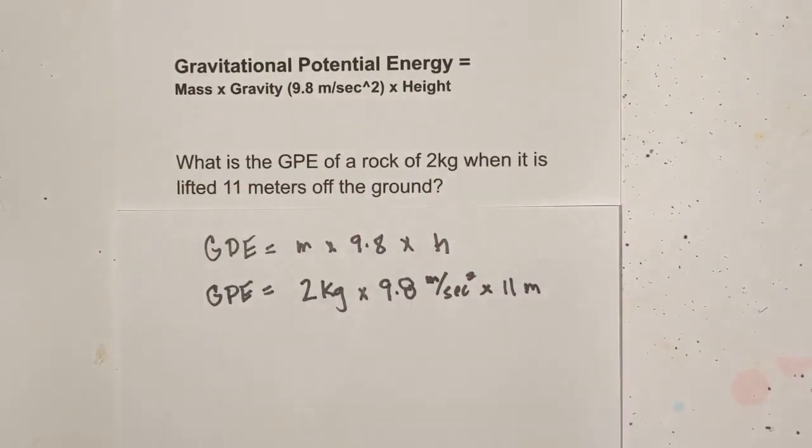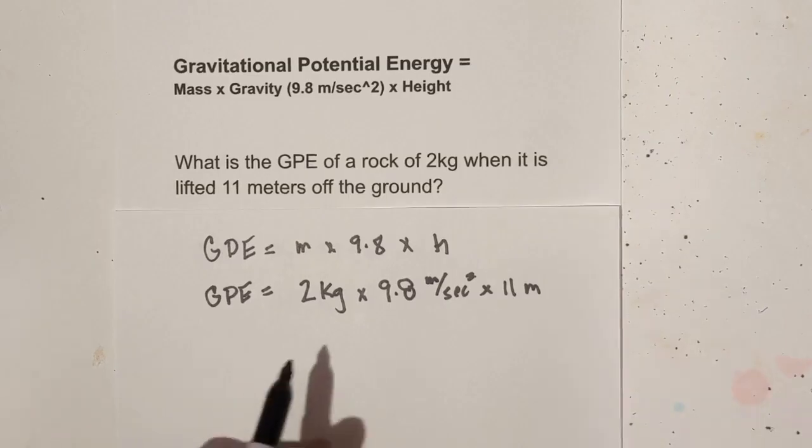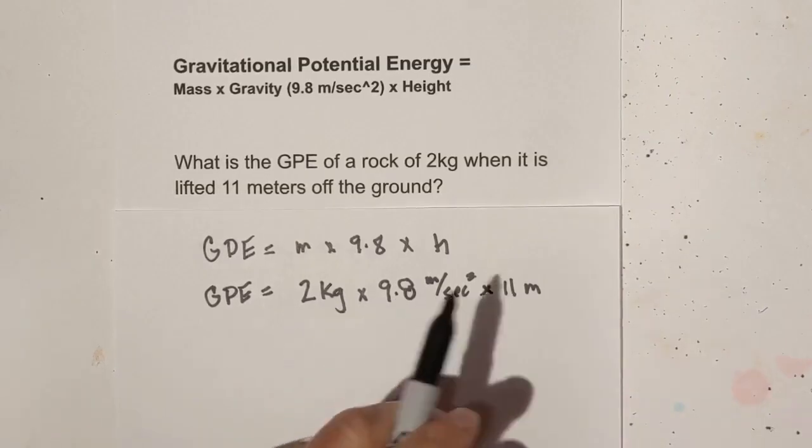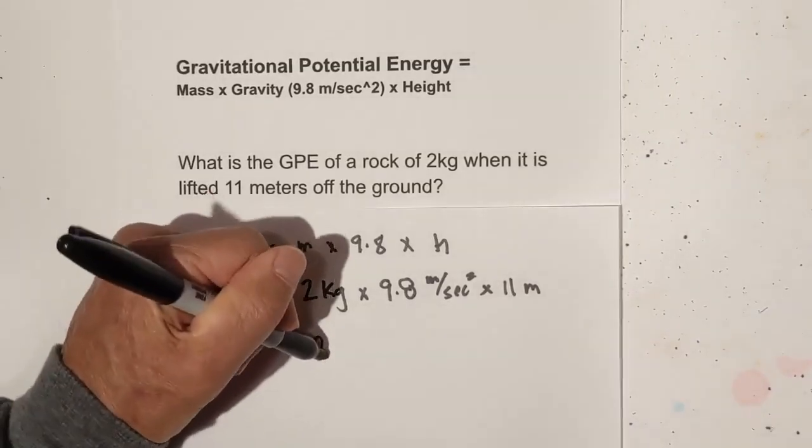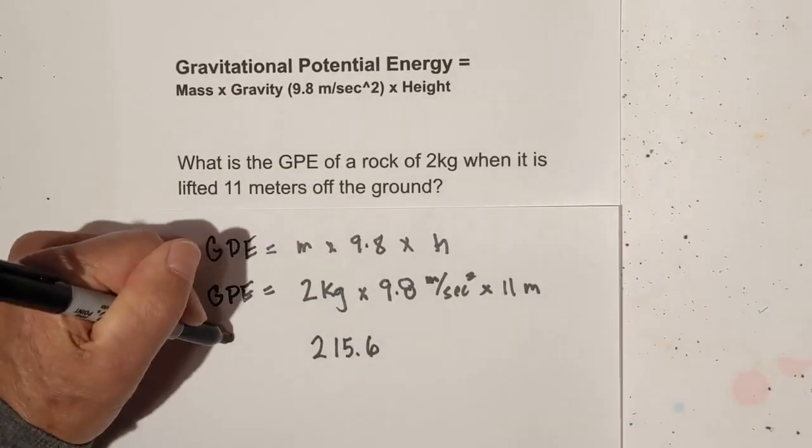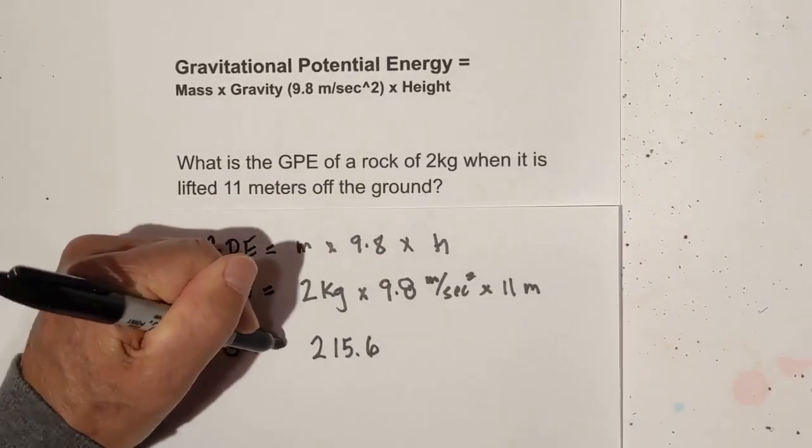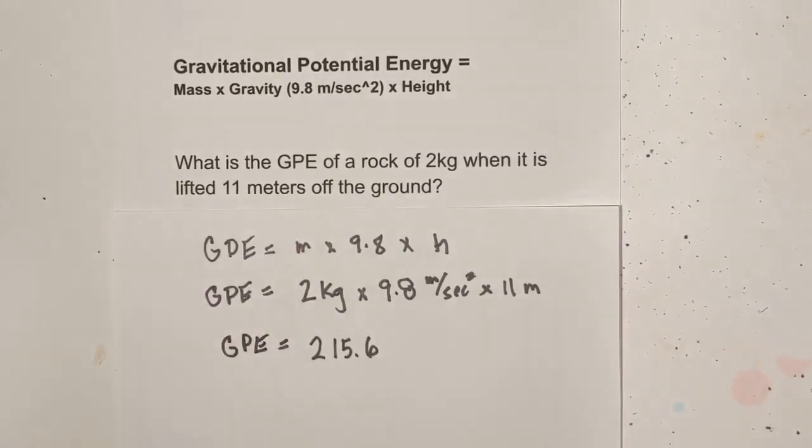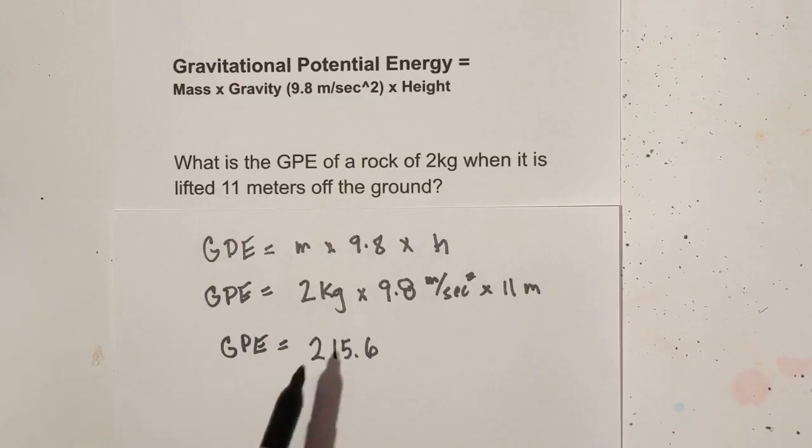So now all we do is multiply. I've done this ahead of time. 2 times 9.8 times 11 equals 215.6. Now, what is your unit of measure of the gravitational potential energy? Well, let's figure this out.